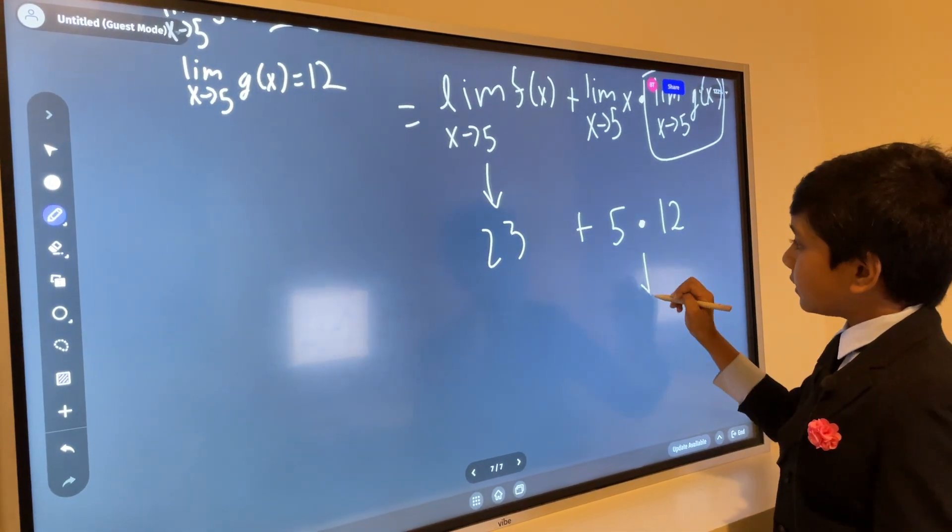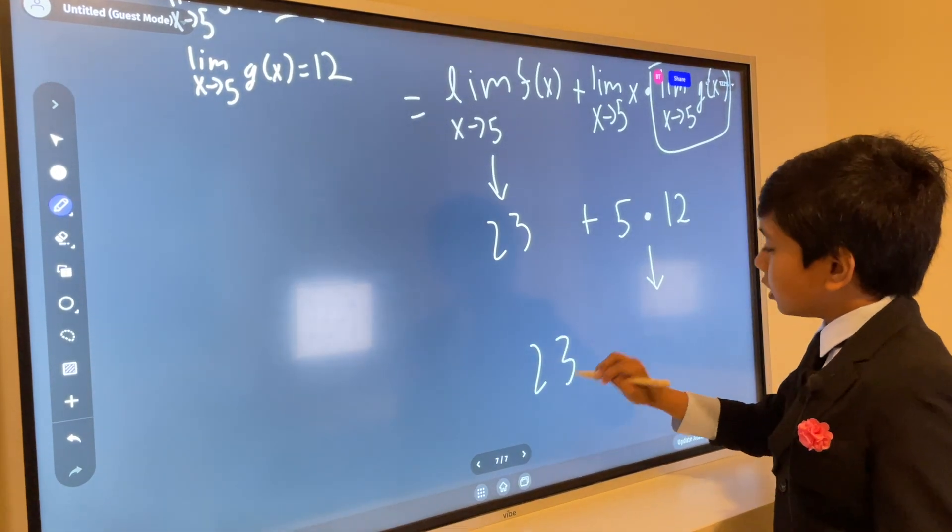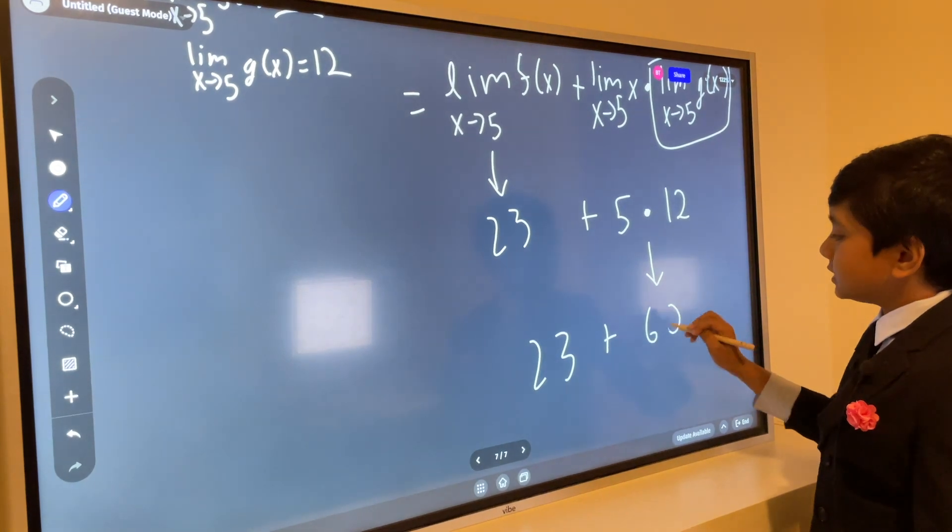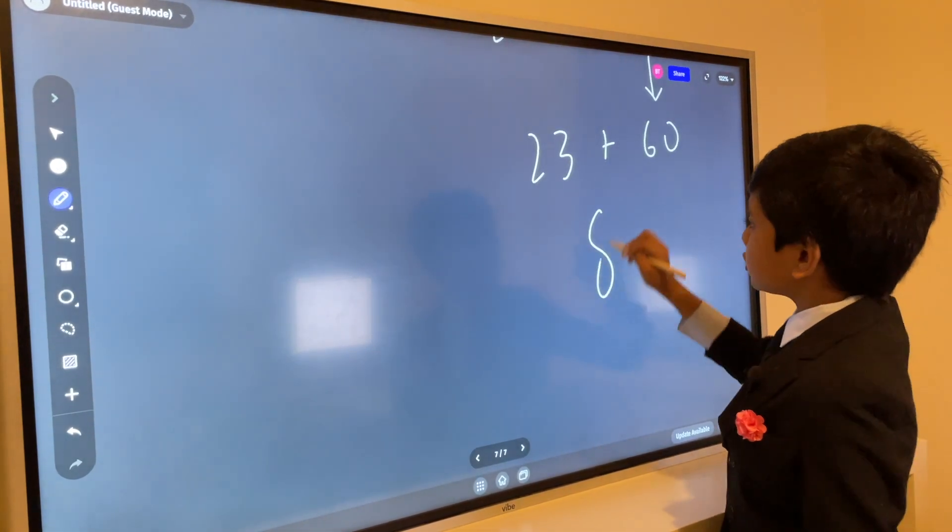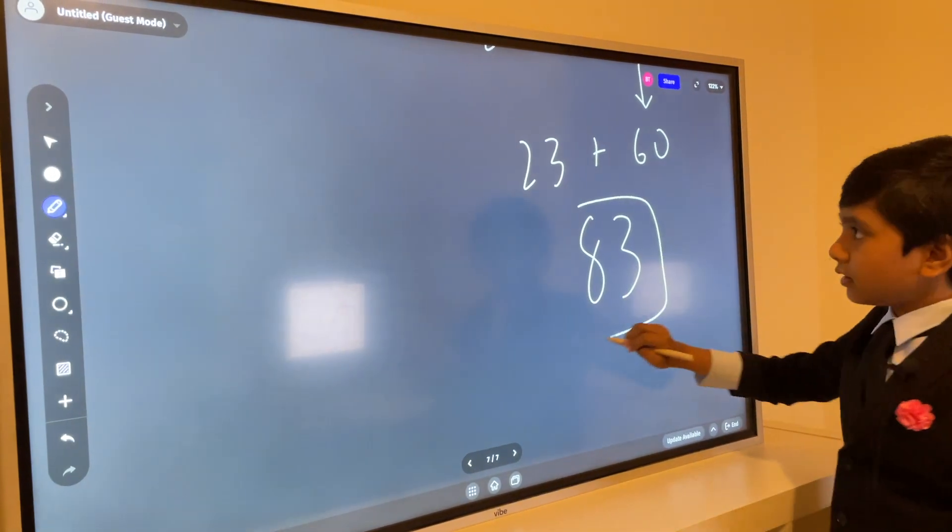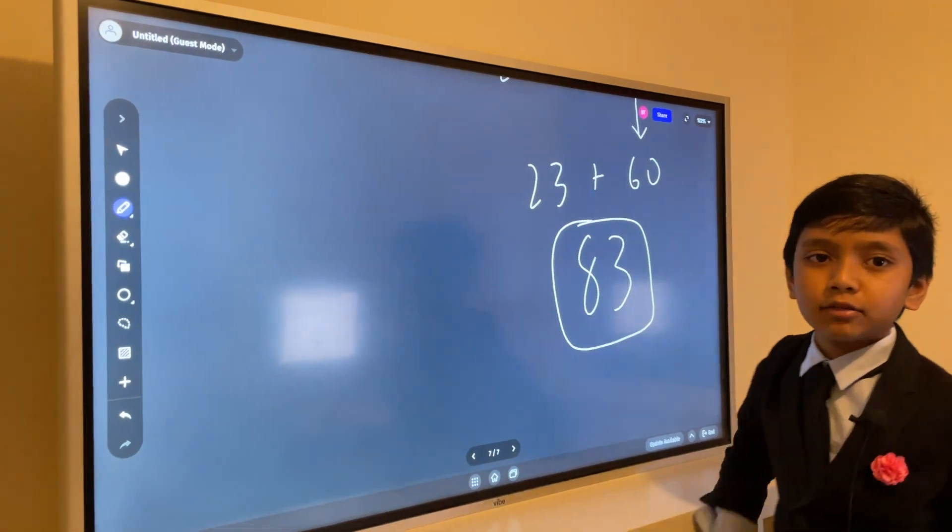So that leaves us with the expression 23 plus 60, giving us a total answer of 83. Thank you everybody, and see you in lesson 4.